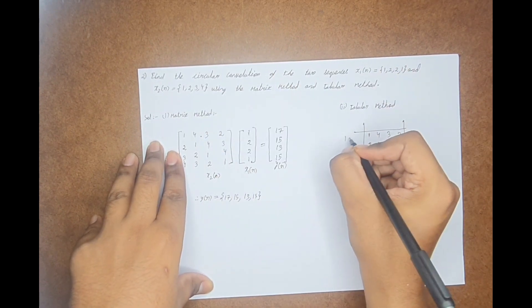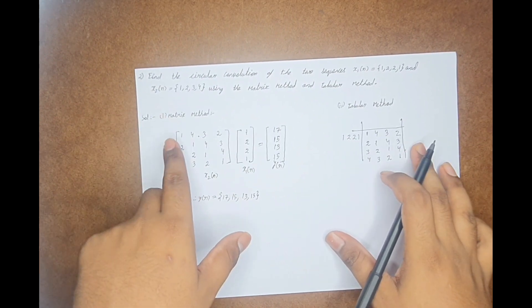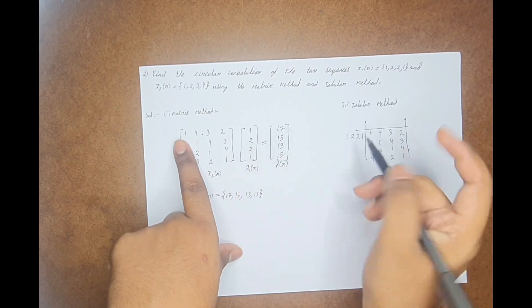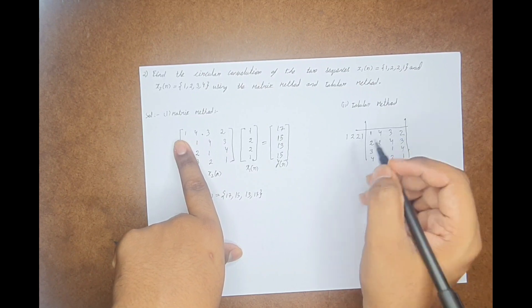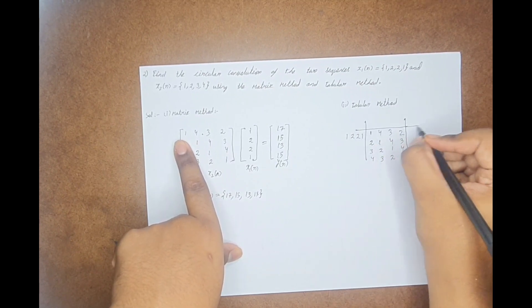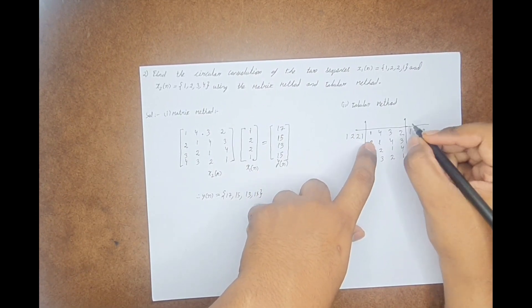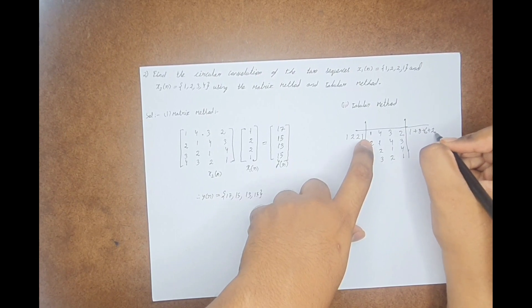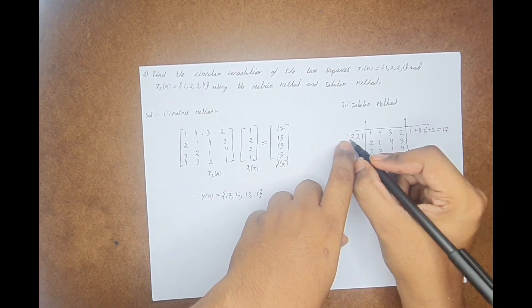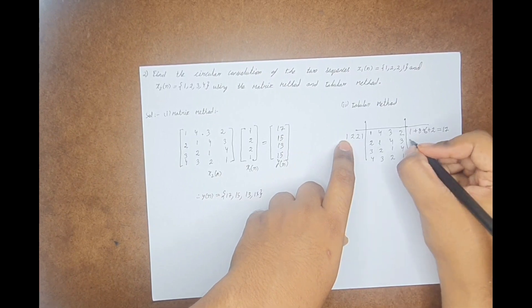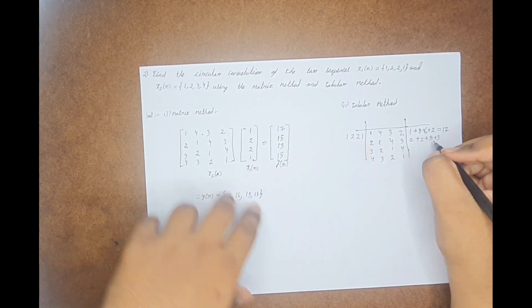Now write the other x1(n) in this manner. The only difference between the matrix and tabular method is that in matrix method you are multiplying both the matrices. Here, you need to multiply these values with each and every row. So if you do this, we get 1 plus 4 twos which is 8, plus 3 twos are 6 plus another 2, which will give me 9, 15, and 17. Similarly, multiply these values with these, which is 2 plus 2 plus 8 plus 3, which is 15.